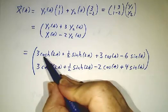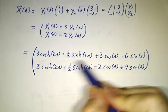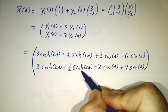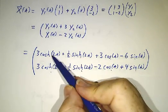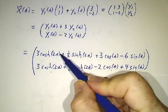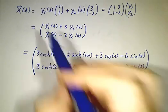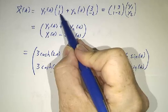So we wind up with some terms that look like cosh of 2t, terms that look like sinh of 2t, cos, sin. The cosh and sinh of 2t's have the same value upstairs and downstairs, because they're being multiplied by the vector (1, 1).